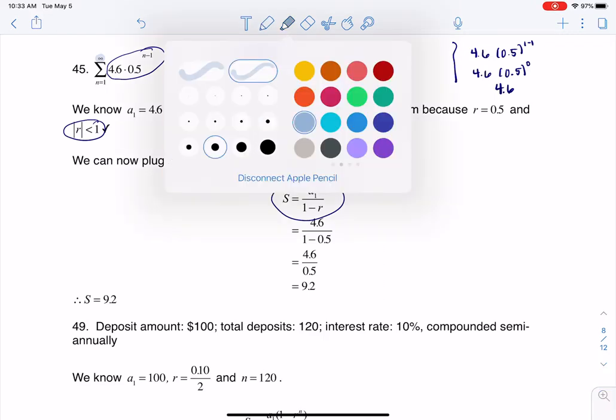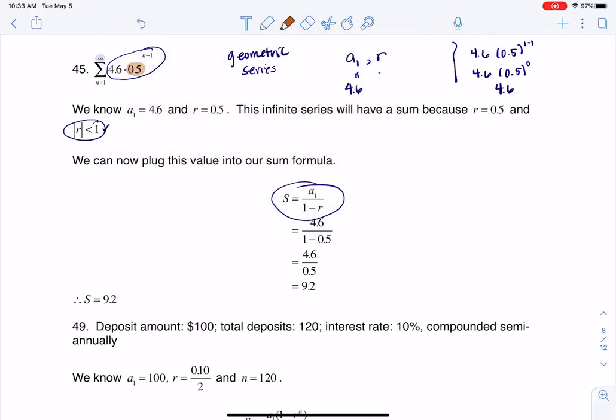Now your r value, whenever you're looking for your r, it's the base of your power. And in this case, that is 0.5 or 1 half.